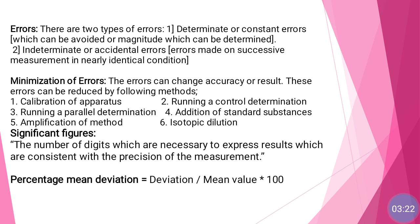Indeterminate or accidental errors are errors made on successive measurements under nearly identical conditions. This type of accidental error cannot be corrected. These are errors made on successive measurements in nearly identical conditions, and they can only be minimized.